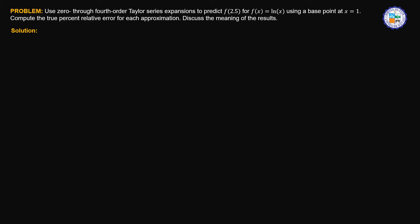Here is the solution. We are trying to solve for ln of 2.5 without directly using the calculator. Instead, we will be using the Taylor series expansions to approximate the function value at that point. But recall that to use such a theorem, we need to know the function value at a certain point and the derivative value at a certain point as well.